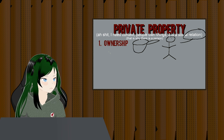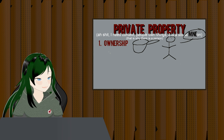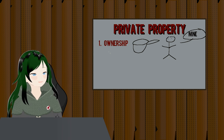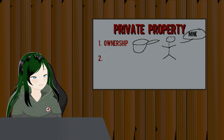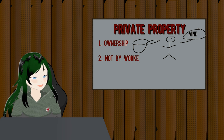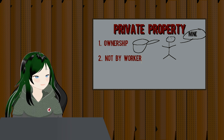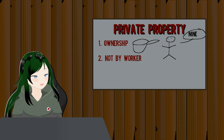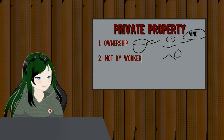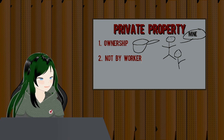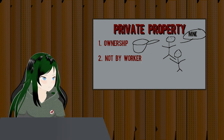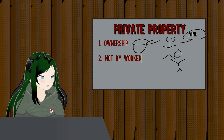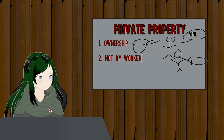Personal property is property somebody owns and intends to personally use, typically in methods outside of commodity production. The car you drive around with, the house you live in, etc. Private property is property one person or group owns for the explicit purpose of controlling somebody else's access to it. This is typically property owned for commodity production. Examples of this include restaurants and factories.